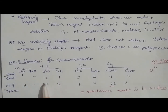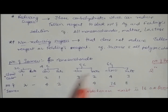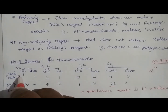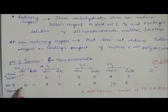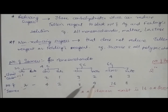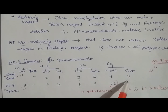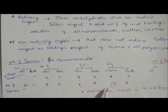For four-carbon sugars, n=2 chiral carbons, giving 2²=4 isomers. For five-carbon aldoses, n=3, giving 8 isomers. For six-carbon aldoses (aldohexoses), n=4, giving 16 optically active isomers. For ketohexoses with five carbons, n=3 gives 8, and with four carbons n=2 gives 4. Aldohexoses thus have 16 optically active isomers with different enantiomers. We will see all these in detail.